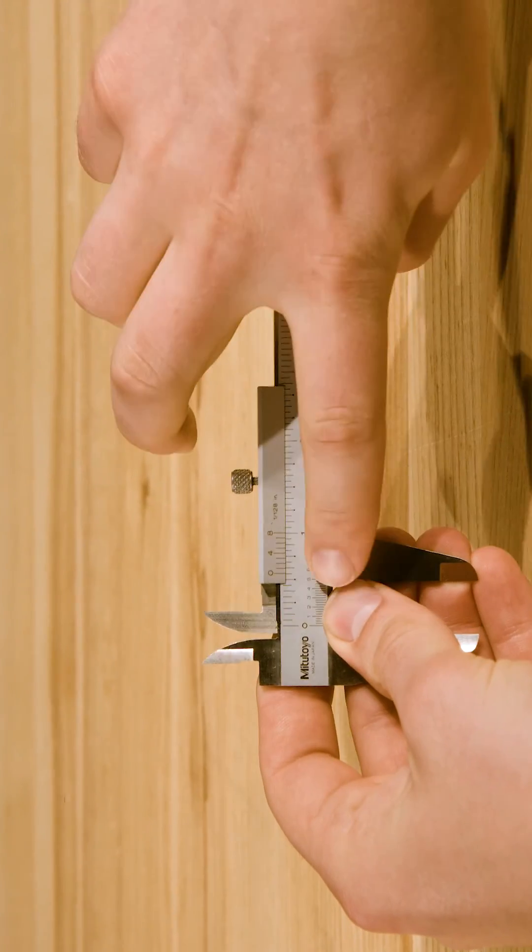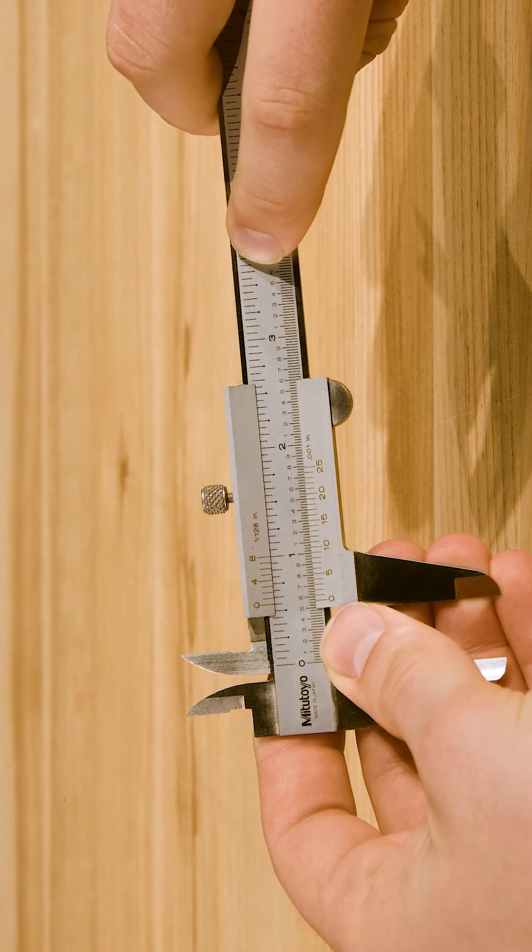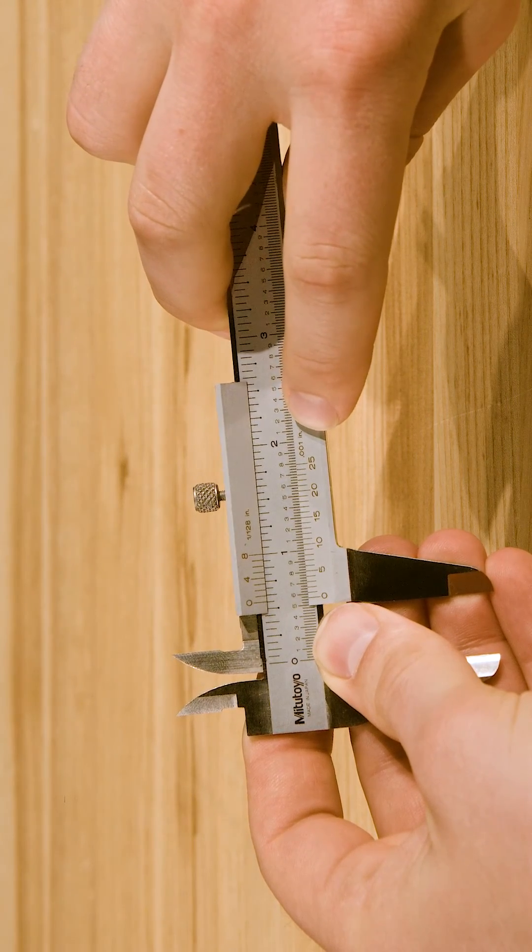The vernier scale is located on the sliding jaw. The number of lines is not the same for all calipers, but on most current inch vernier calipers you'll find 25 graduations for a final graduation of .001 inches.